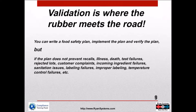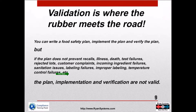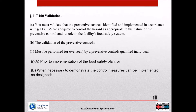Validation is where the rubber meets the road. You can write the plan and implement it, but if it doesn't prevent outcome variables — test failures, rejected lots, customer complaints, incoming ingredient failures — then the plan, implementation, and verification are not valid. That's a hard thing for people to learn to think about.